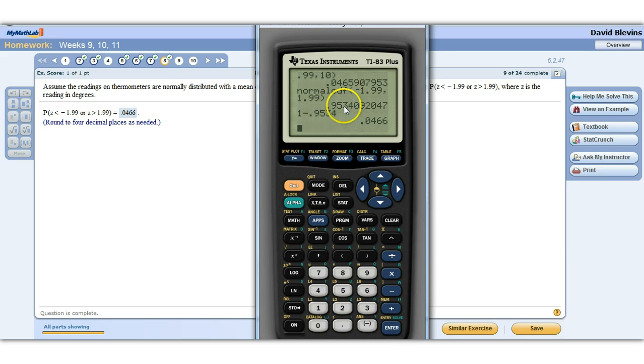And then subtract that from 1. One minus point nine five three four. This is what's between them, this is what's on the inside of those two numbers. This is what's to the left of the first one and to the right of the second one.